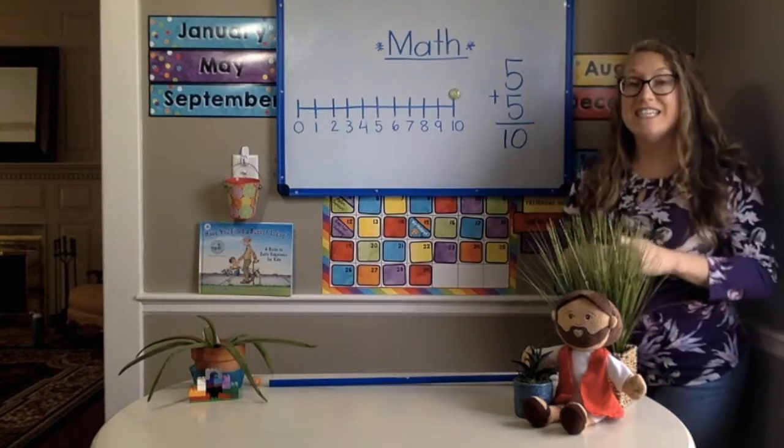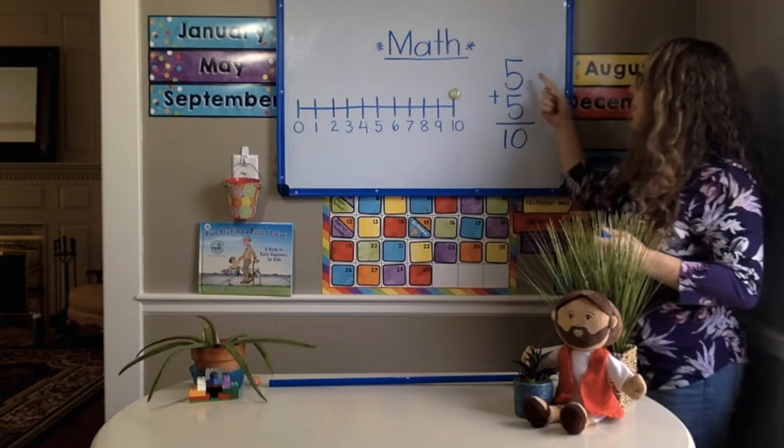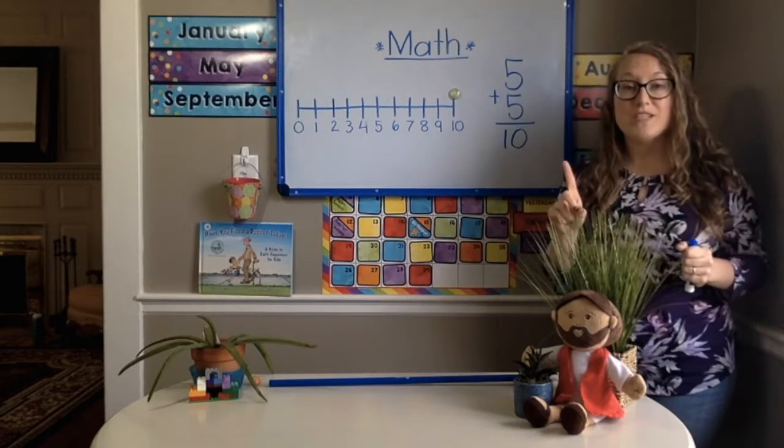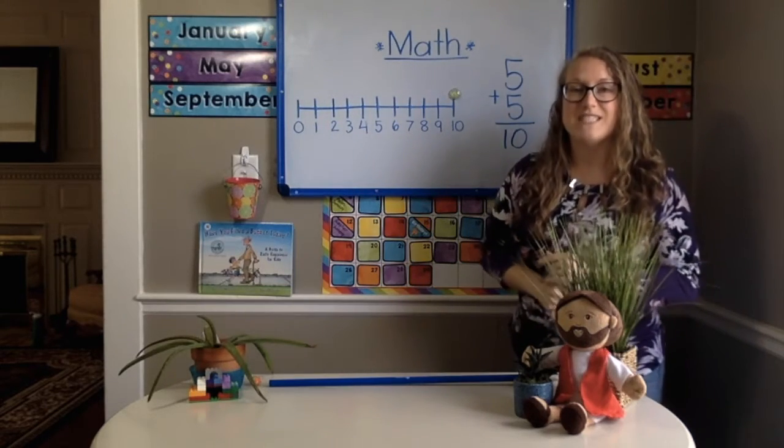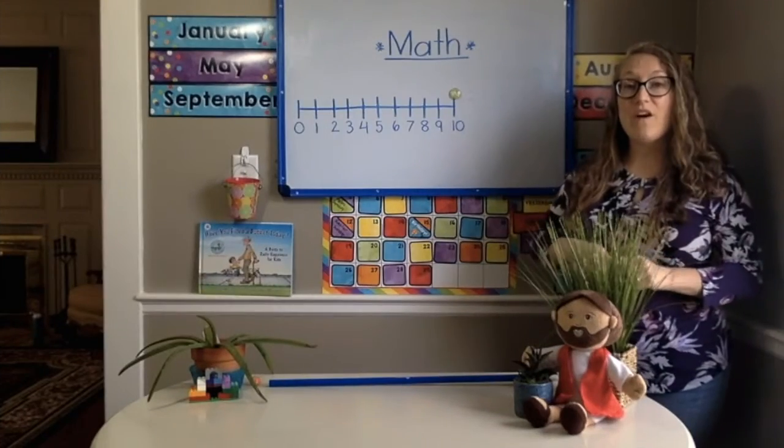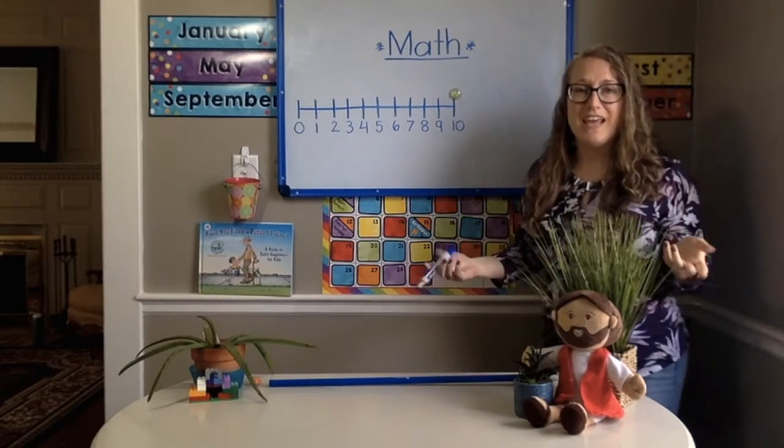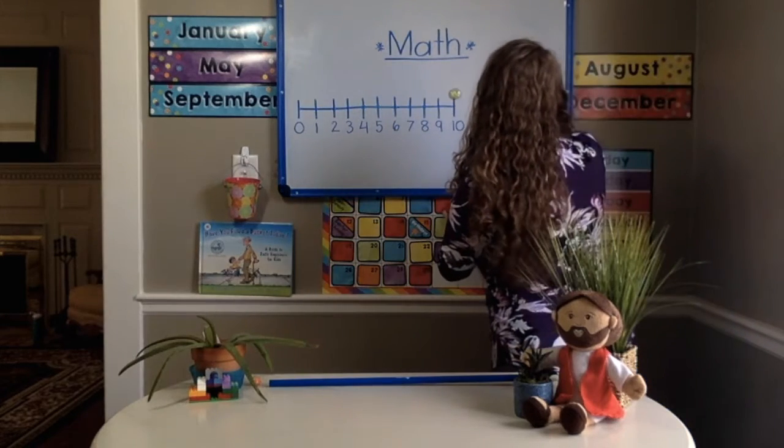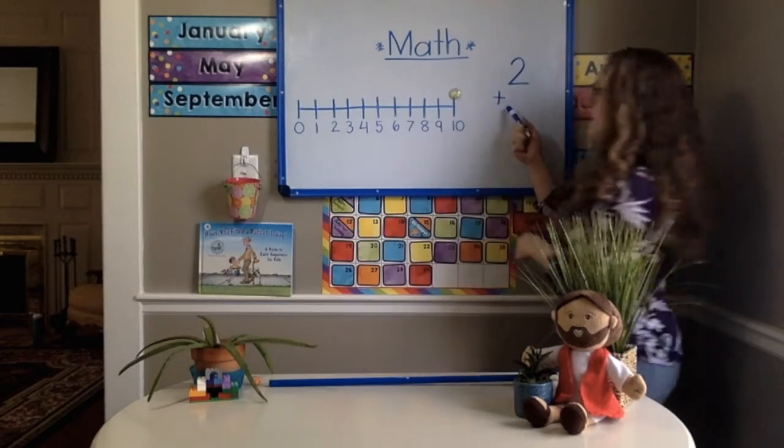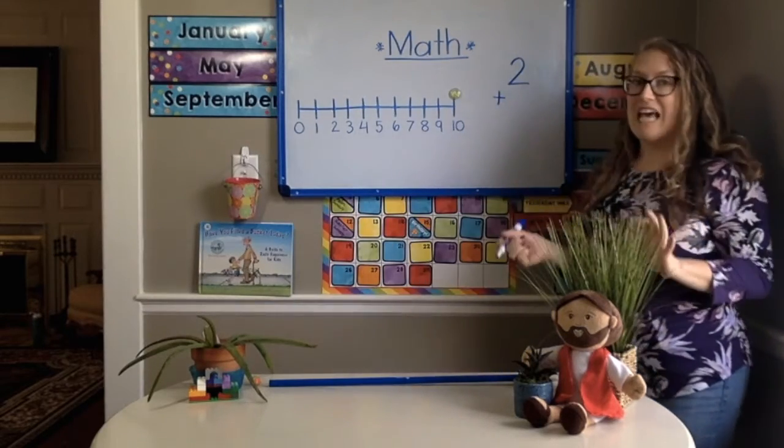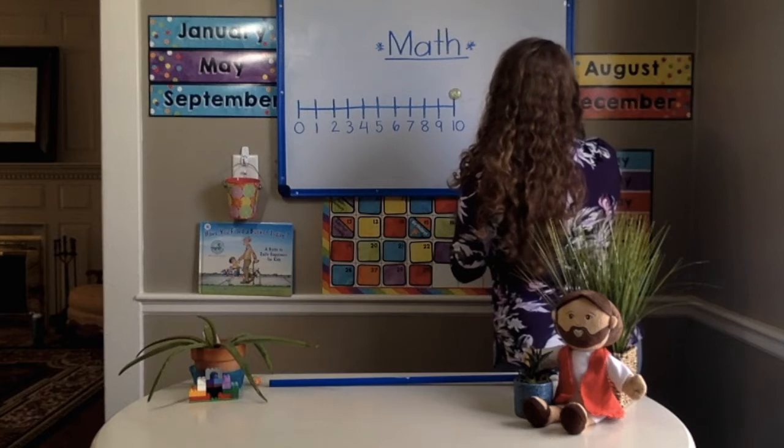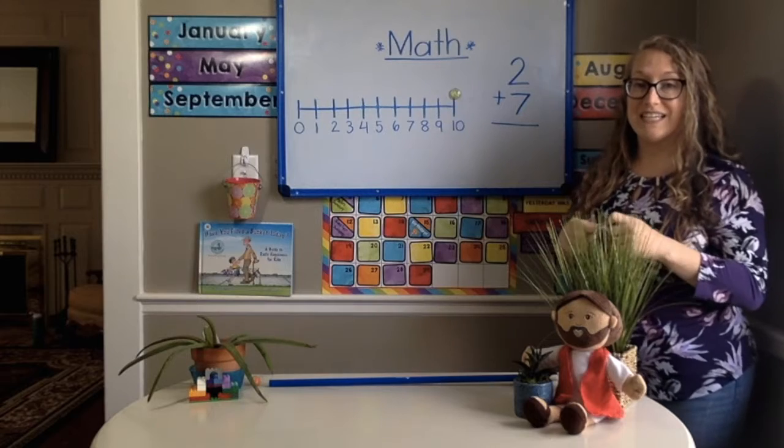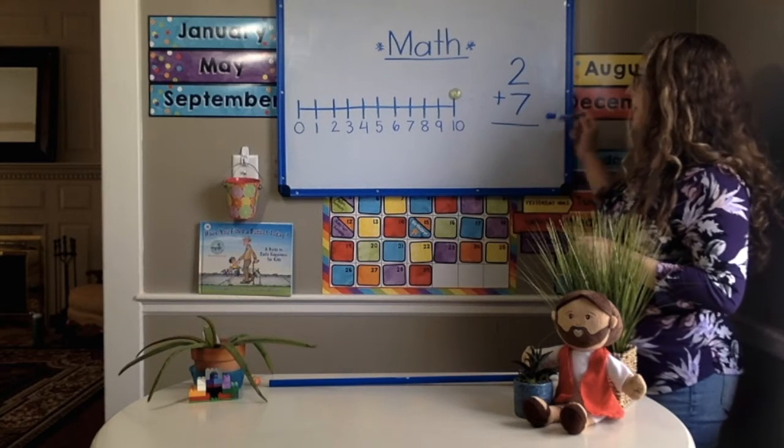So now our addition sentence today says 5 plus 5 equals 10. Let's do one more together and then you can go off and play one of your math games. Alright, kindergarten. Your last math problem today, let's do 2 plus 7 equals. Alright, so now your addition sentence today says 2 plus 7 equals.